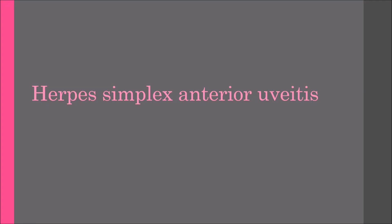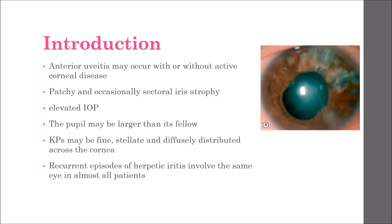We are going to discuss anterior uveitis caused by certain species of herpes virus. We are going to discuss the herpes simplex virus and start with the introduction. Anterior uveitis is caused by certain species of herpes virus.